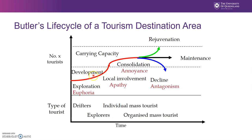The destination continues to develop until it hits this point — what we call carrying capacity, which I mentioned in your previous lecture. Carrying capacity is when a destination reaches the maximum number of people it can comfortably hold. Think about a classroom with 300 seats — we can only put 300 students in it. If you put 301, that violates fire code, somebody has to sit on the floor — that's not acceptable. That classroom has exceeded carrying capacity and the class would have to be moved.